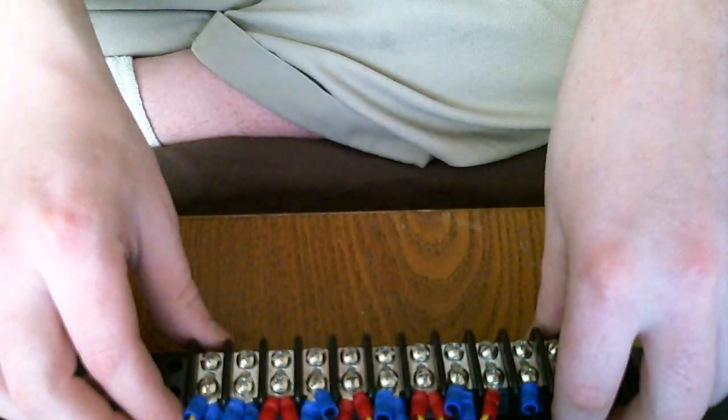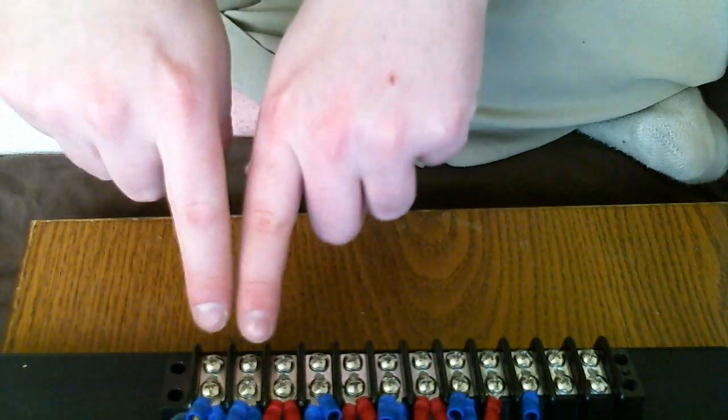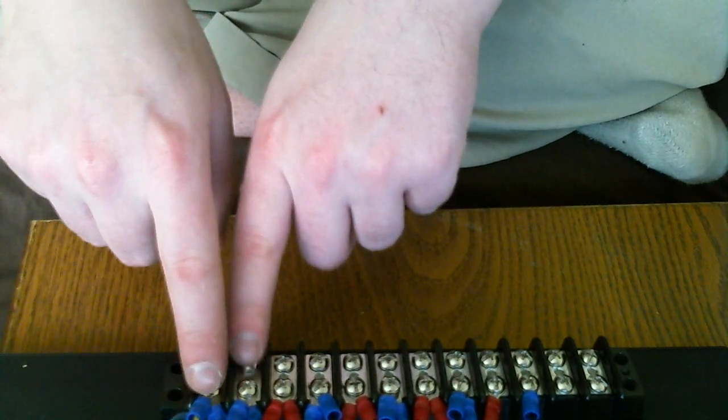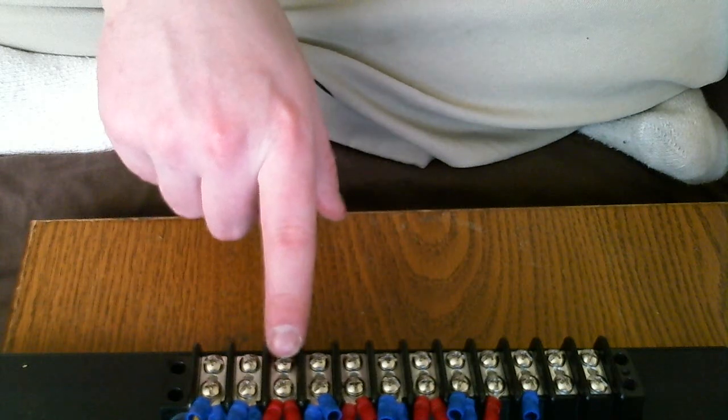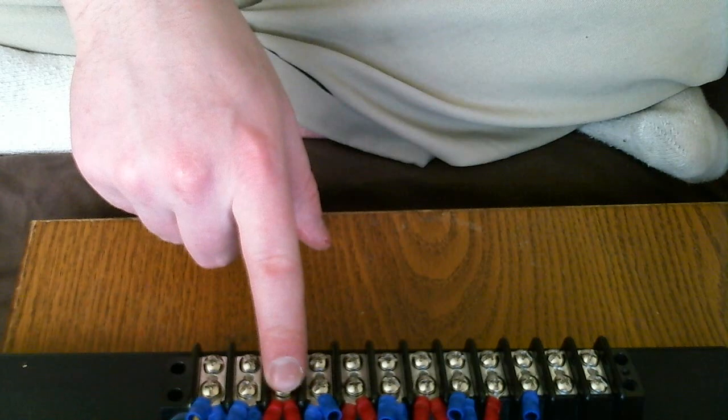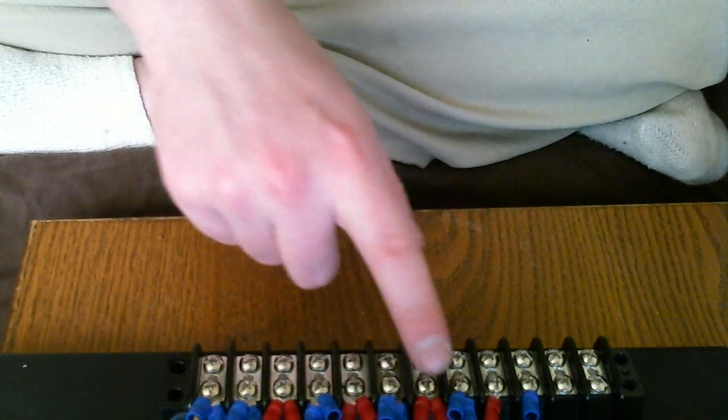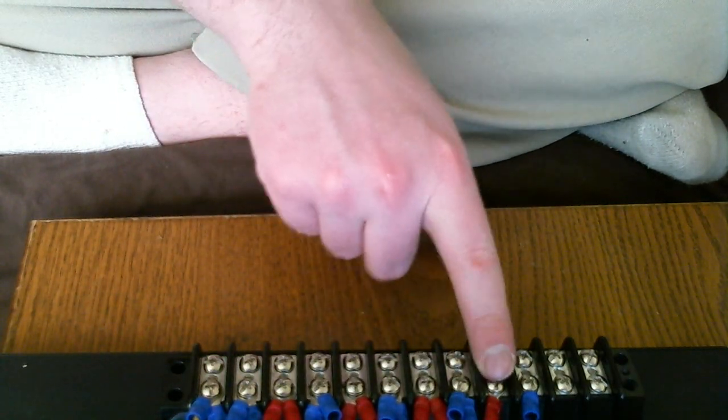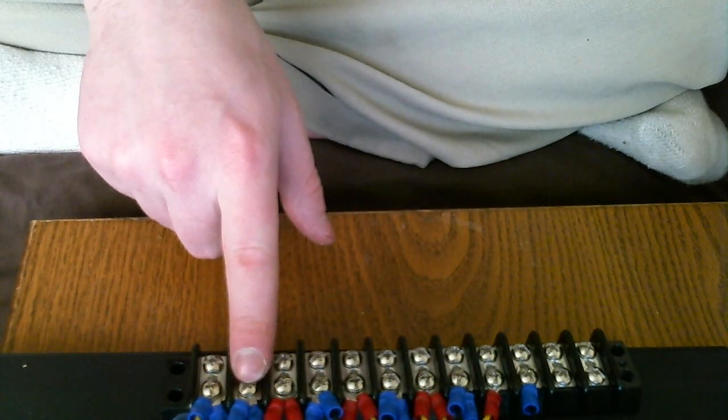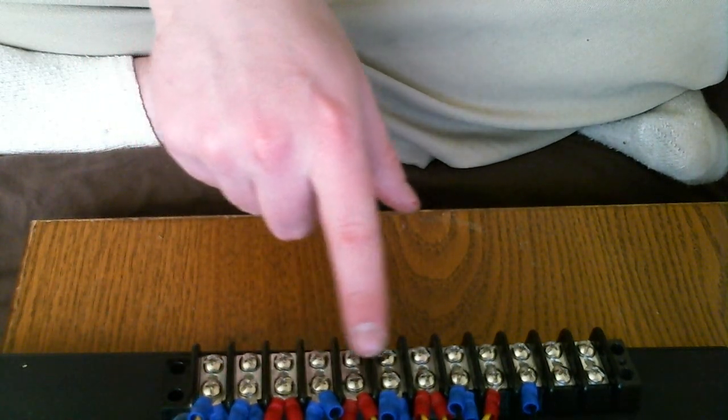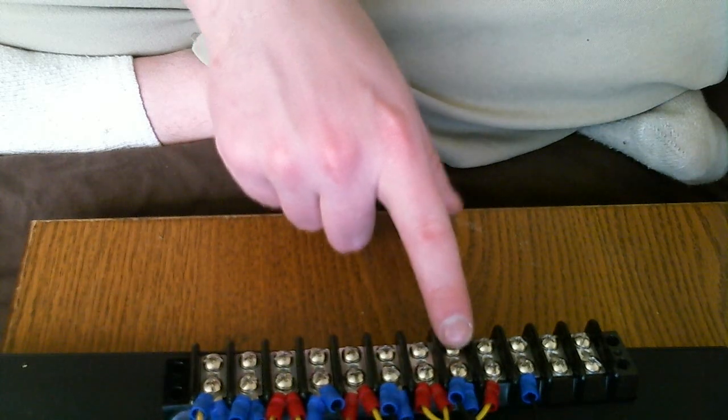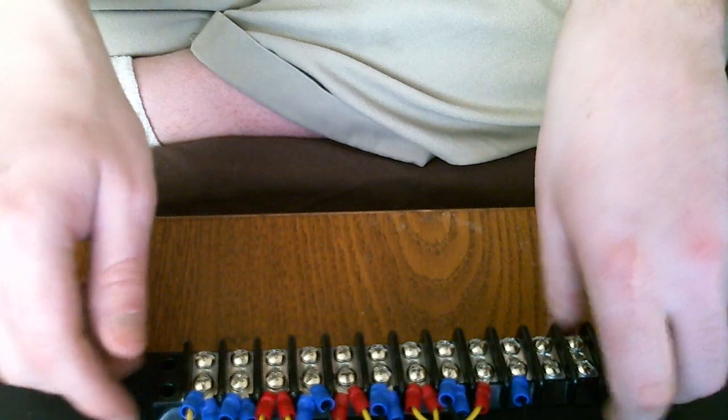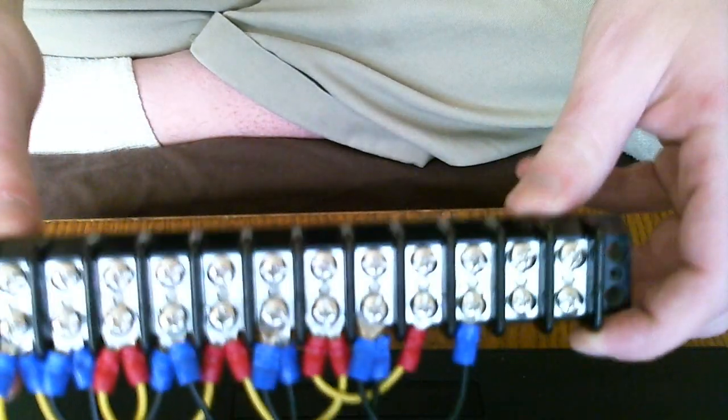And what I did from there, after I attached the positive and negative from the Molex, I just jumped it to the next terminal. So I did 1 and 3, then 5, then 7, then 9 for positive, then 2, 4, 6, 8, and 10 for the negative. Pretty easy.